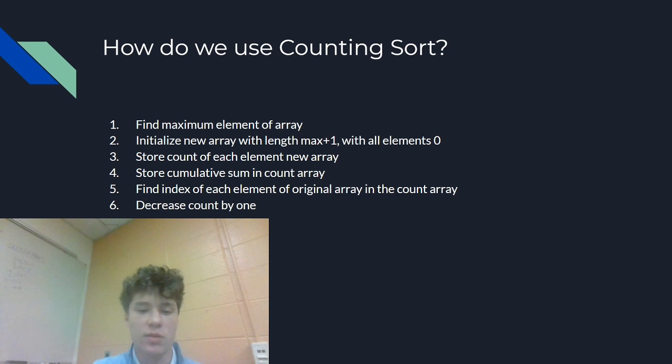Step 2, initialize new array with length max plus 1 with all elements 0. Step 3, store the count of each element in a new array. From this array, we're storing a cumulative sum in a new count array. And then we are finding the index of each element of the original array in the count array, and then we're decreasing the count by 1.